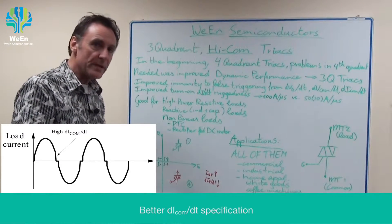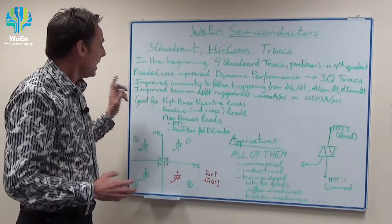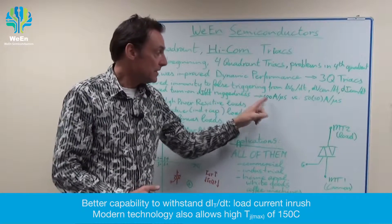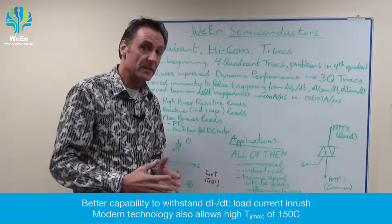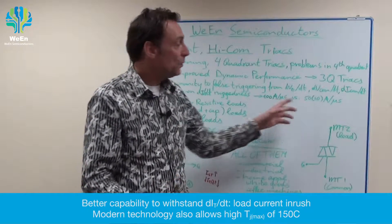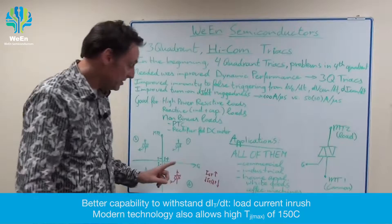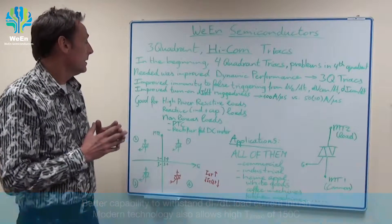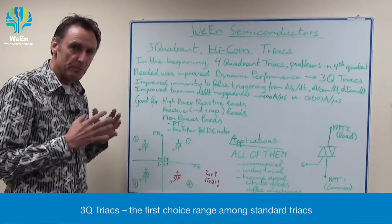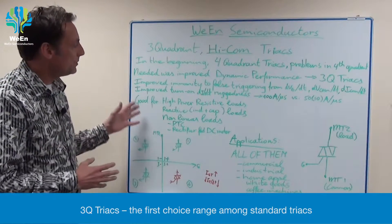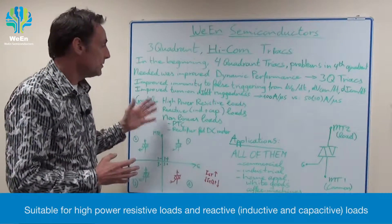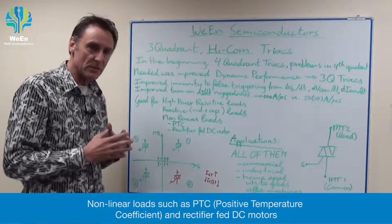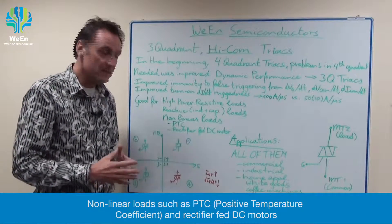Also the three quadrant HICOM triac have an improved turn on DI/DT ruggedness. This value is 100 amps per microsecond in the three quadrant triac versus only 50 or even 10 amps per microsecond for a four quadrant triac. So the three quadrant triac have much improved performance and are very good for high power resistive loads, reactive like inductive and capacitive loads, and non-linear loads, PTC loads and rectifier fat DC motors.